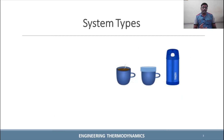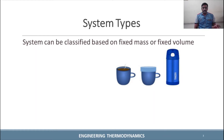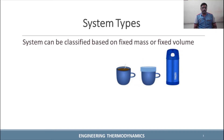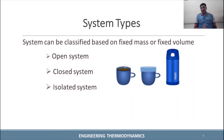Now we will see the system types. Systems are first categorized on the basis of fixed mass and fixed volume. There are three categories: open system, closed system, and isolated system. Closed system and isolated system are fixed mass categories. Open system is the fixed volume category.